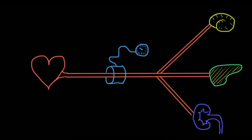To understand vasopressors, we need to understand the circulatory system. I have here a generic, cartoonish cardiovascular system. The heart pumps blood through the arterial system to end organs like the brain, liver, and kidneys. Blood is distributed among those organs, and we take blood pressure upstream of where the regulatory mechanisms occur — at the arteriolar level.